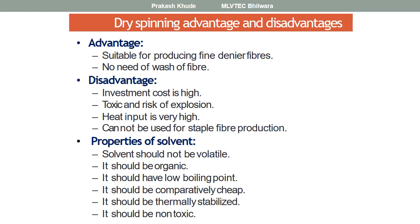The solvent used in dry spinning should be volatile, organic, have a low boiling point, be comparatively cheap, be thermally stable, and should not be toxic. These are the necessary properties that a solvent must have for use in dry spinning systems.